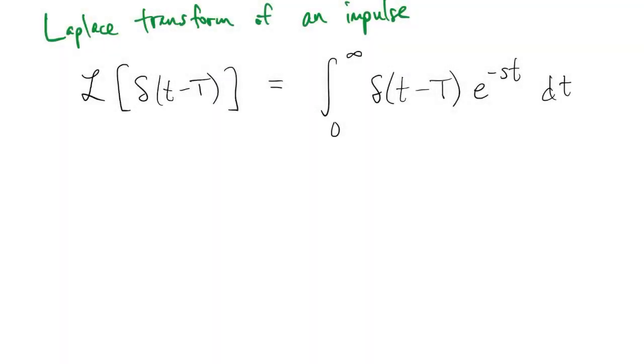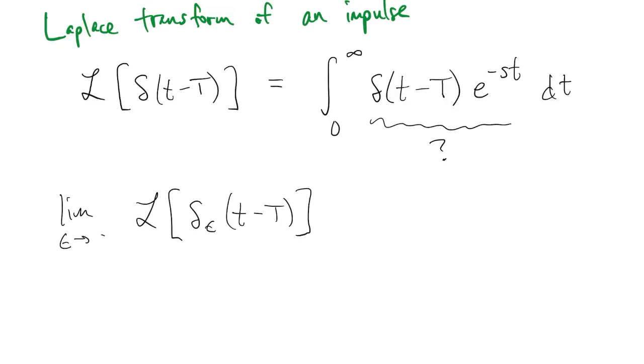One last building block is the Laplace transform of an impulse. I haven't talked about integration with the delta function, but if you're curious, you could take the transform of our normalized window function delta sub epsilon and then let epsilon go to zero.